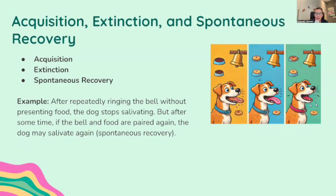Now let's look at acquisition, extinction, and spontaneous recovery. Acquisition is the initial stage of learning when the conditioned stimulus is repeatedly paired with the unconditioned stimulus to create an association. Extinction is the diminishing of the conditioned response when the conditioned stimulus is no longer paired with the unconditioned stimulus. Spontaneous recovery is the reappearance of a previously extinguished conditioned response after a pause once the CS and UCS are paired again. For example, after repeatedly ringing the bell without food, the dog stops salivating — but after some time, if the bell and food are paired again, the dog may salivate again. That's spontaneous recovery.